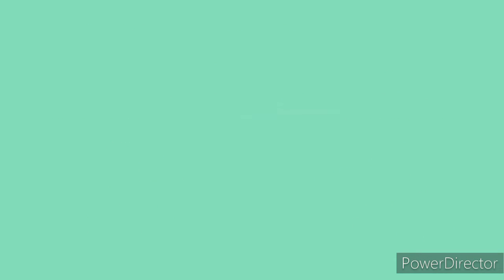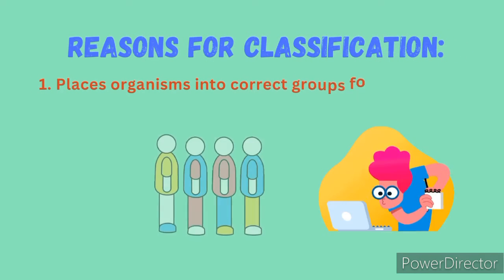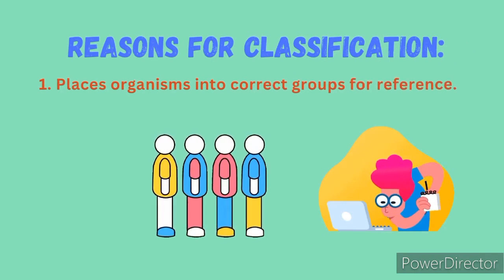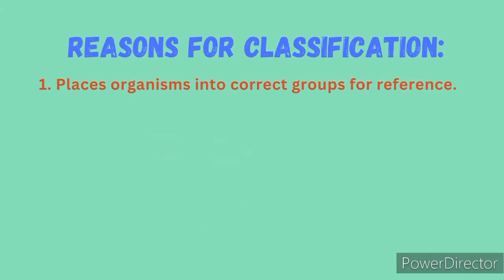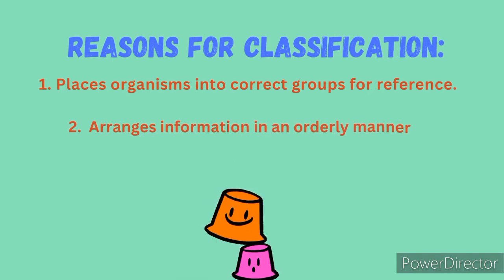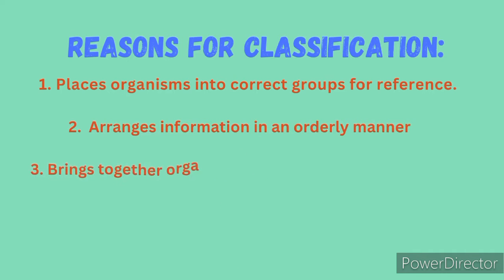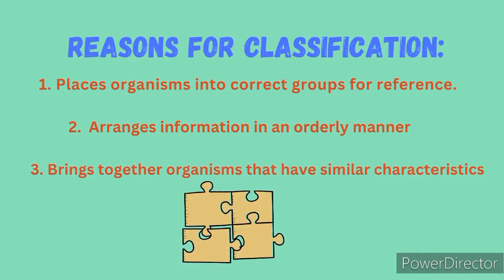What are the reasons for classifying organisms? Number 1, it places organisms into correct groups for easy reference. Number 2, it arranges information in an orderly manner — this, of course, prevents confusion. Number 3, it brings together organisms that have similar characteristics and separates those that have different characteristics.